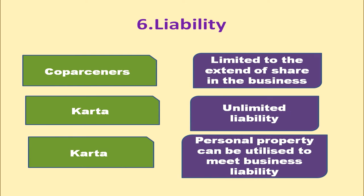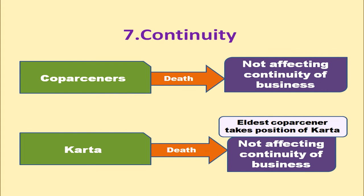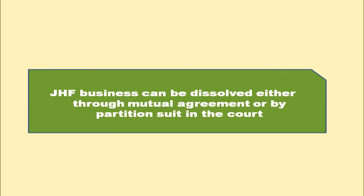Regarding continuity, the death of the Karta will not affect the continuity of the business, because the eldest co-parcener will take the position of Karta and the business will continue. A co-parcener's death also will not affect continuity, as the business is already run by the Karta. Joint Hindu Family business can be dissolved either through mutual agreement or by filing a partition suit in the court.